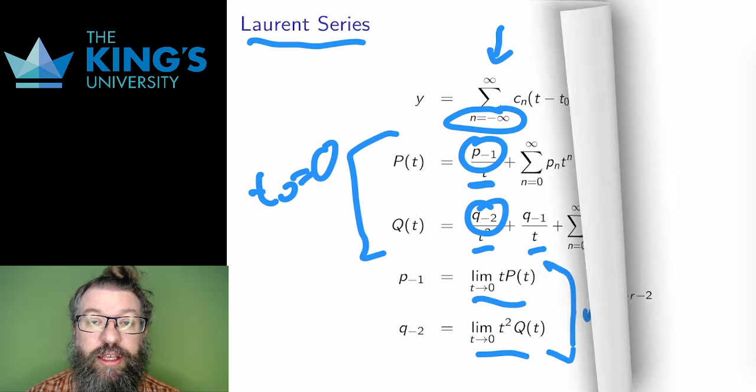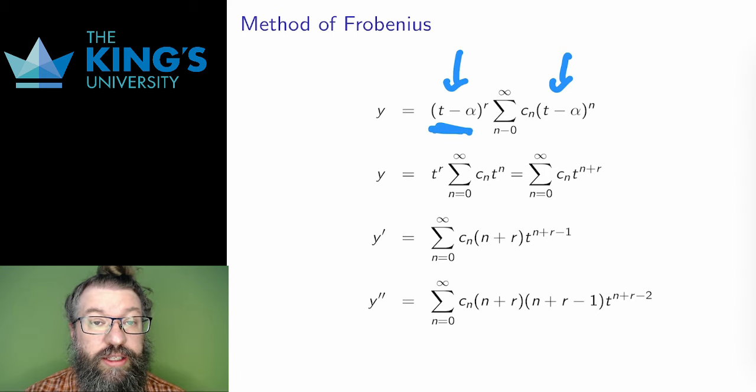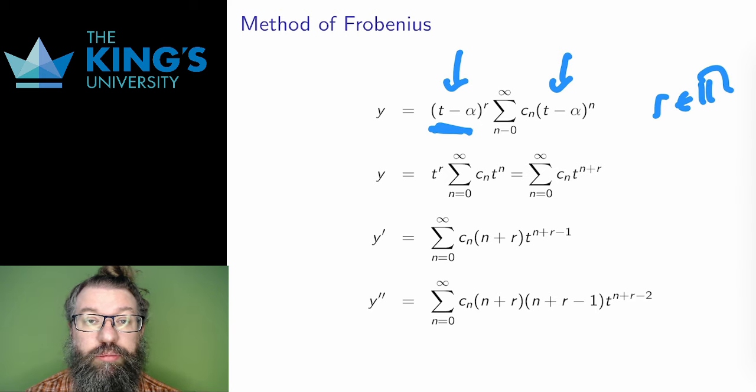Now the setup is done, so I can get into the technique. The idea is to use a series, but with extra power. This is an ordinary Taylor series, but I multiply by t minus alpha to the power r, where r is literally any real number. Importantly, r doesn't have to be a whole number. It could be a fraction, or even an irrational number. This extra flexibility in the solution setup, this extra power, will allow for solutions at regular singular points. This technique is called the method of Frobenius.